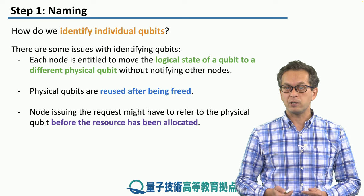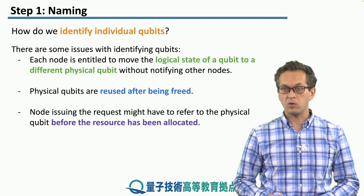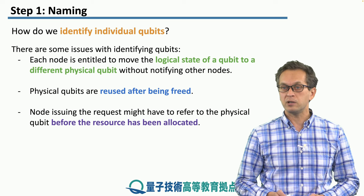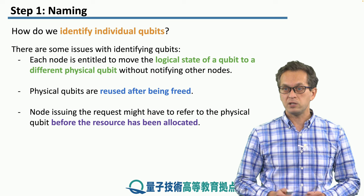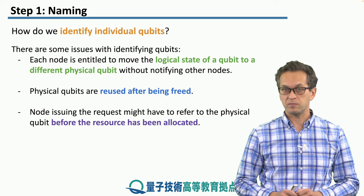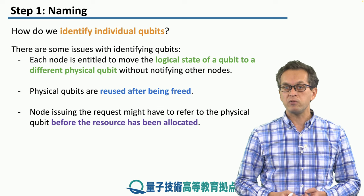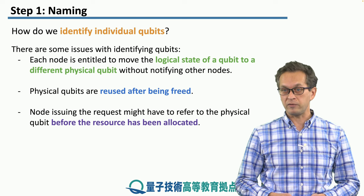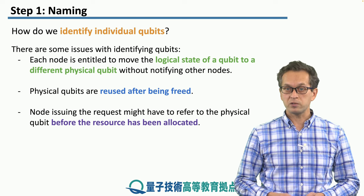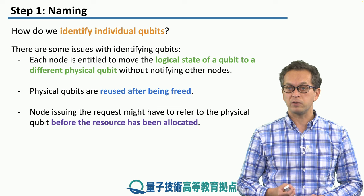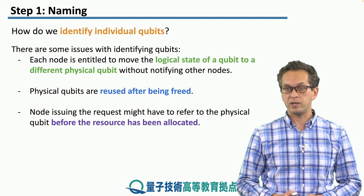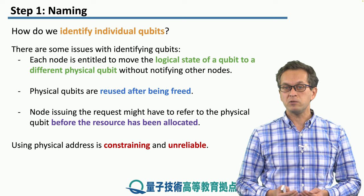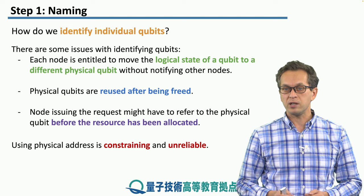Each node is entitled to move the logical state of a qubit to a different physical qubit without notifying other nodes. The other nodes don't care in which particular quantum memory the state is stored — it just cares about the state that's shared between the nodes. Also, physical qubits are reused after being freed, so they may correspond to other states after they are freed and reused. Also, the node issuing the request might have to refer to the physical qubit before the resource has been allocated. Because of all these issues, we can say that using physical addresses is constraining and unreliable.